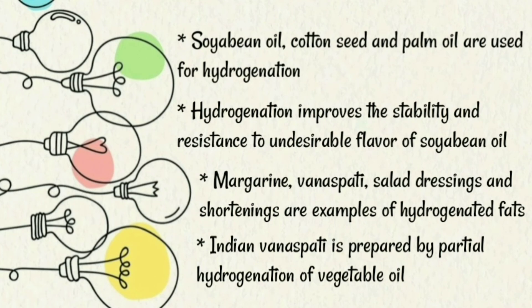The hydrogenation of soya bean oil improves its stability and resistance to the development of undesirable flavor. Margarine, vanaspati, salad dressings, and shortenings are examples of hydrogenated fats. Indian vanaspati is prepared by the partial hydrogenation of vegetable oils.